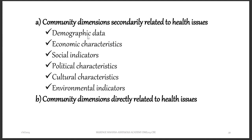Some things to look at include demographic data — the landscape, the people, and the terrain. Is it healthy? You also look at the economic characteristics of the community — is it developed or underdeveloped? Also look at social indicators, how people live socially, political characteristics, cultural characteristics, and environmental indicators.